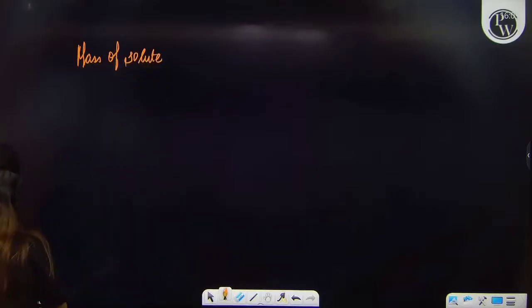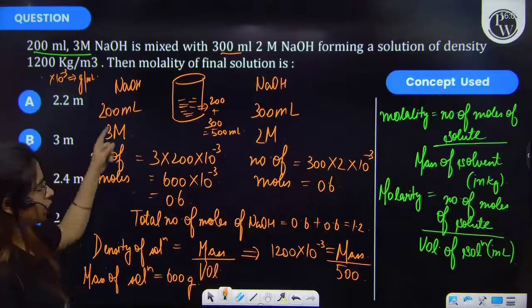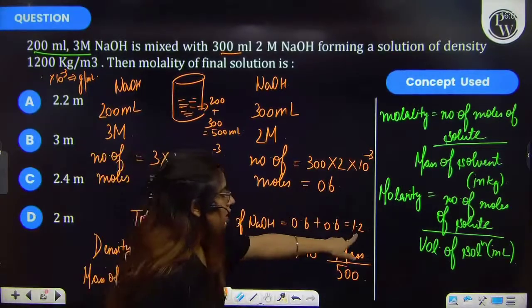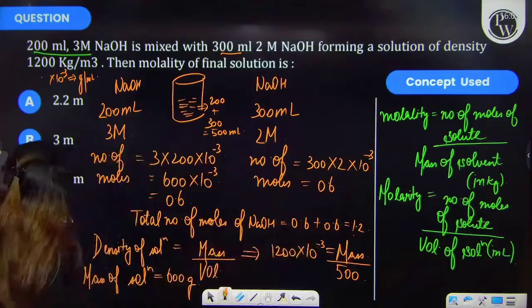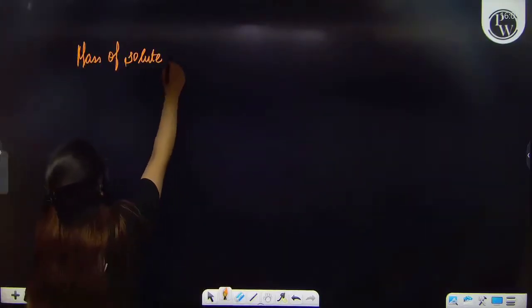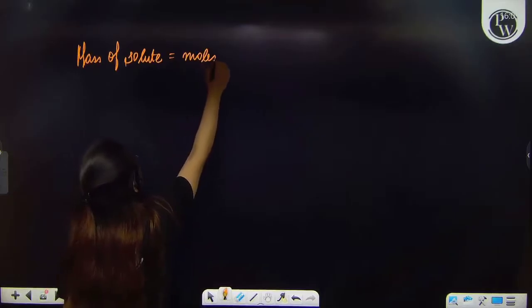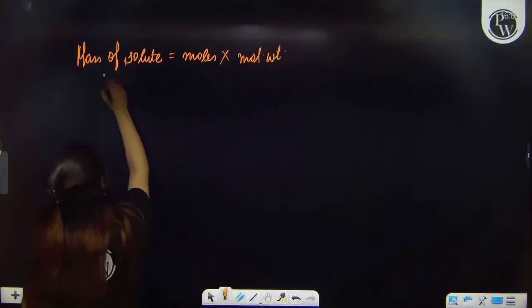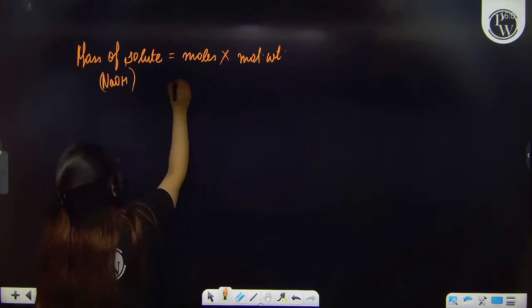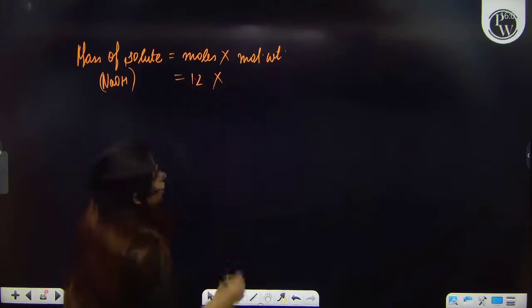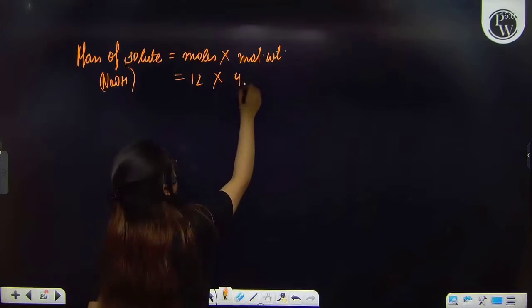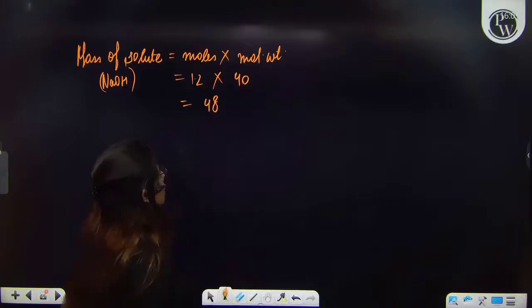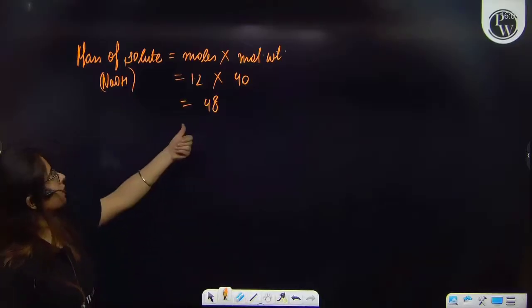Now let's find the mass of solute. The solute is NaOH. NaOH moles were 0.6 and 0.6, so total were 1.2 moles. So mass of solute will be moles into molecular weight. So total moles were 1.2 and molecular weight of NaOH is 40 gram per mole. So this is the mass of solute.